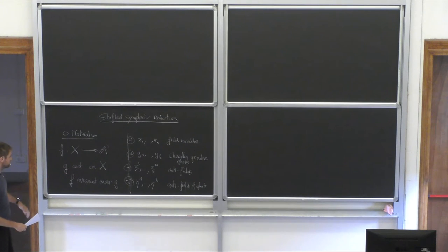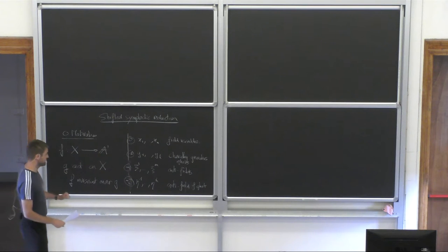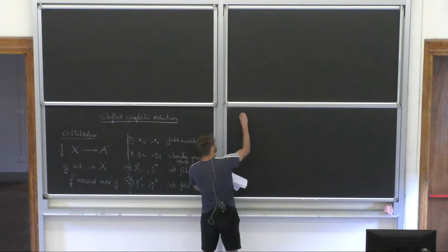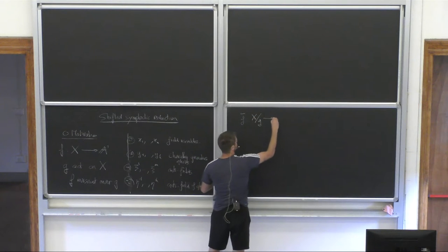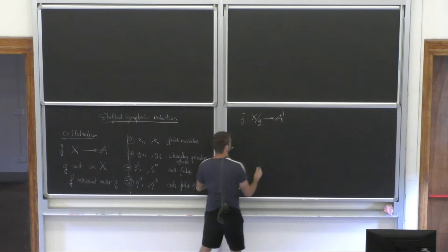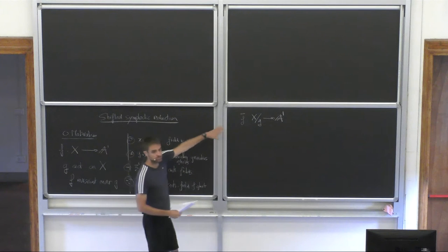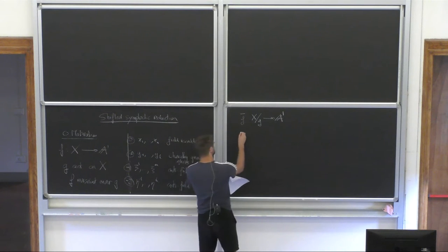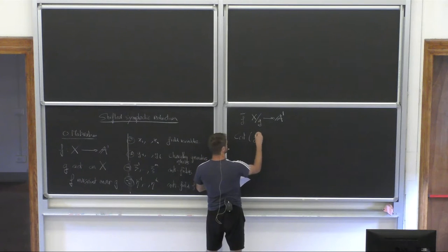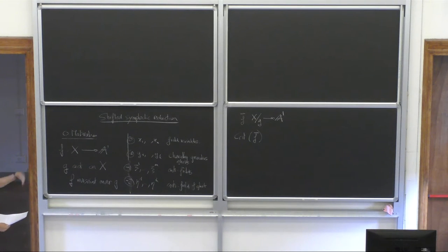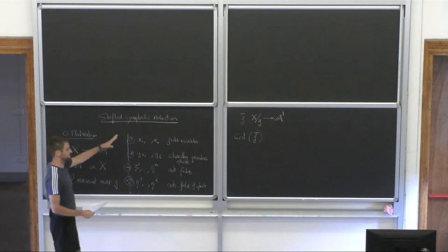This is a reminiscence of the fact that there's a minus-one shifted symplectic structure. Since F is invariant, F descends to a function F-bar on X mod G. What we've computed — the algebra generated by all these variables — is the algebra of functions on the derived critical locus of F-bar.